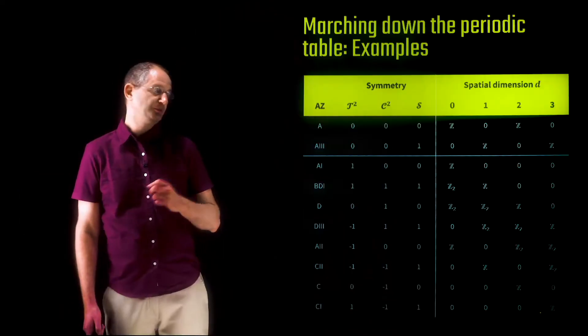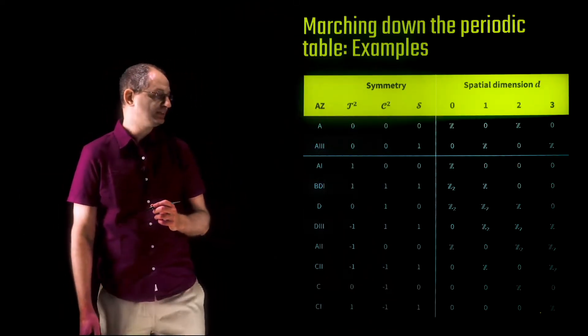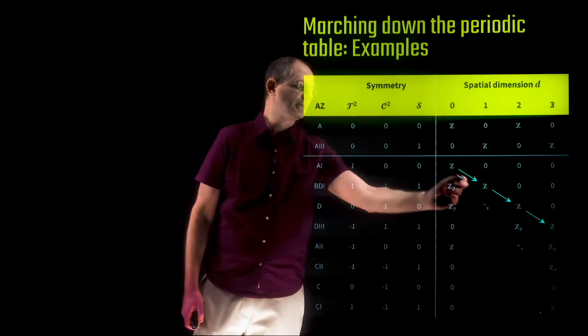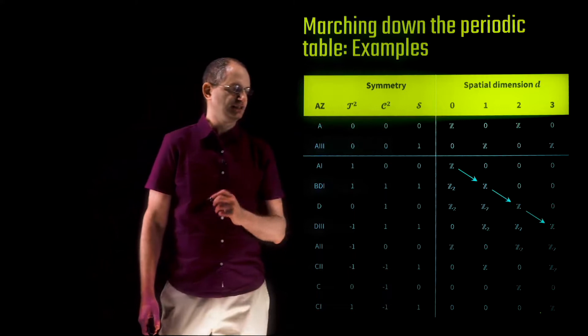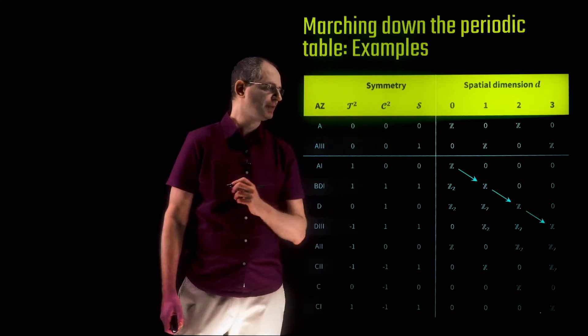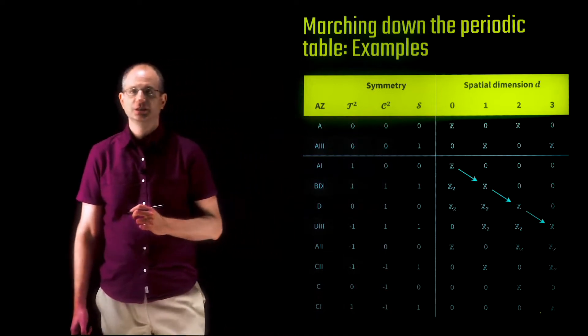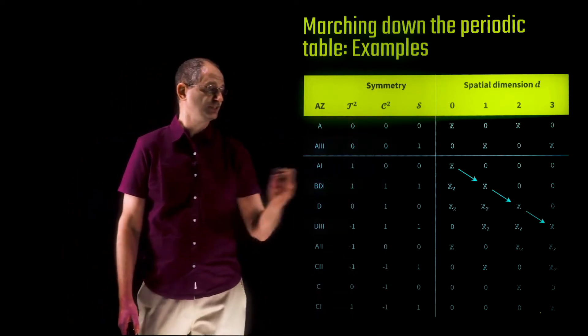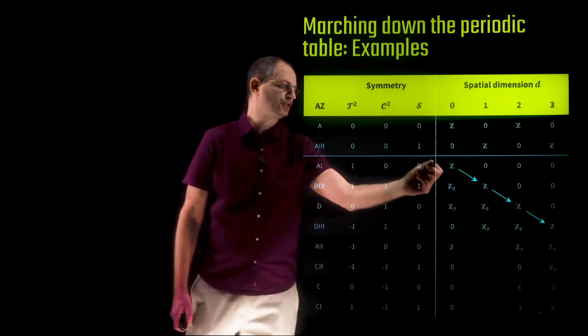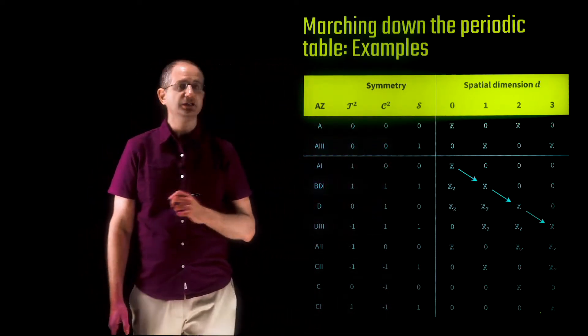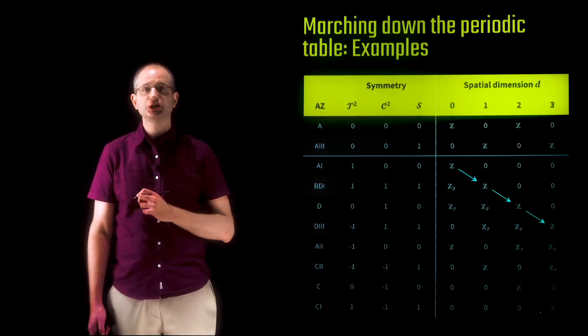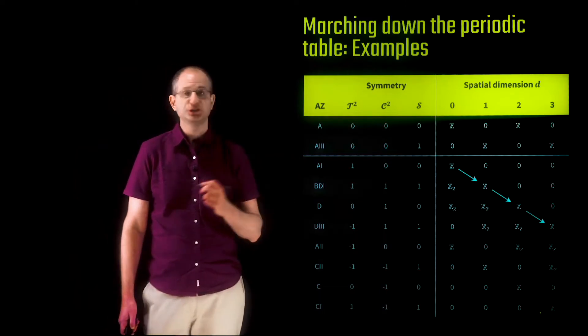Welcome back. Last time we saw the general classification of topological insulators and superconductors in terms of the periodic table. This time we're going to flesh out a little bit the entries of this table. In particular, we're going to focus on one diagonal of this table, starting from class AI in zero spatial dimensions and marching down the diagonal to see what the corresponding classification of each symmetry class is and what its physical meaning is.